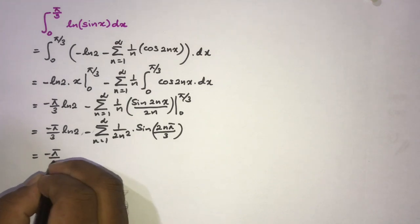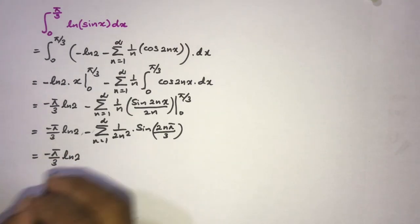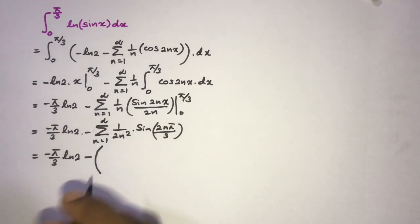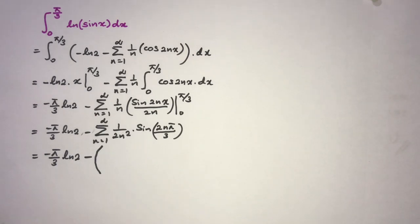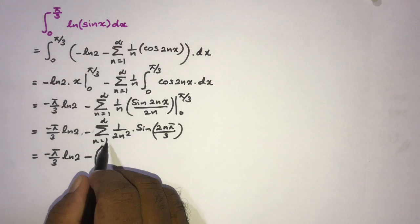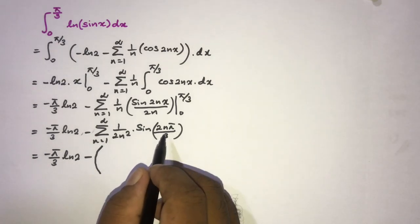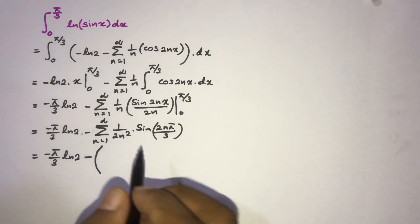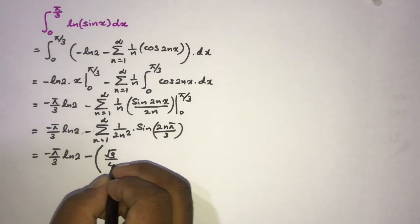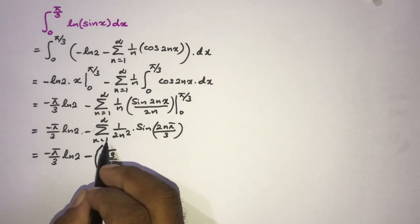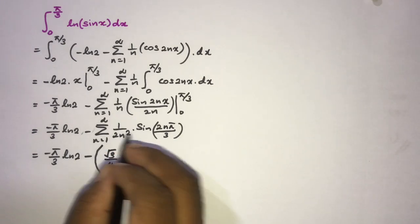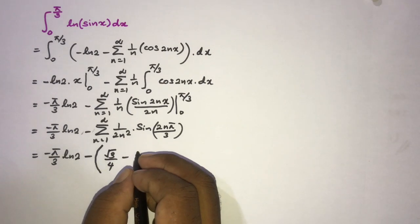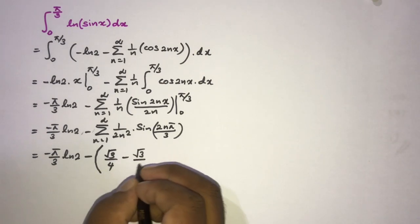Now I am going to expand this series. Writing out the first terms: for n=1 we get sin(2π/3) = √3/2, giving √3/4; for n=2 we get sin(4π/3) = -√3/2, giving -√3/16.